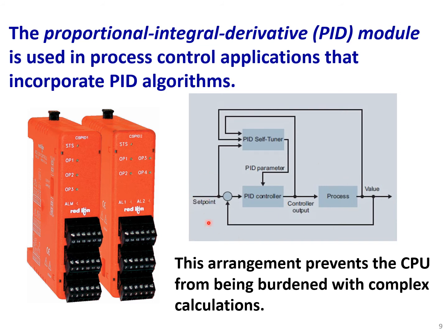In a PID controller control diagram, we have a set point, the PID controller, our process or plant, and a feedback loop. We can have a more advanced PID self-tuner or adaptive version. The PID controller itself consists of proportional, integral, and derivative — performing sound calculation plus accepting feedback — and again, to lift the burden from the CPU, we use this specific type of module.